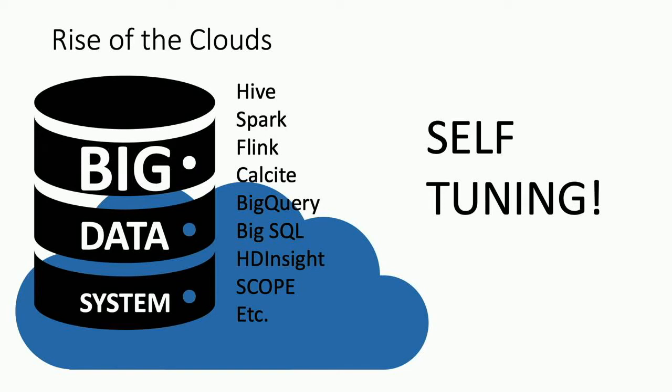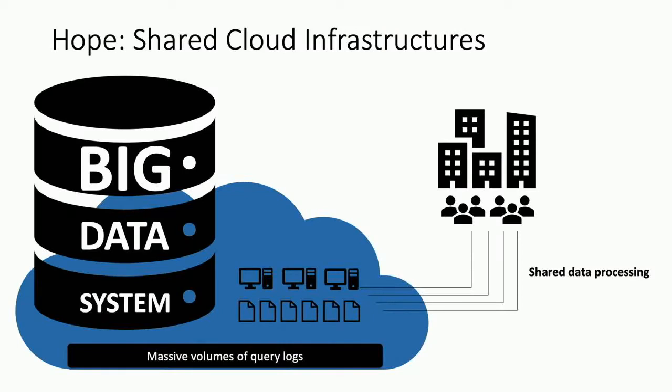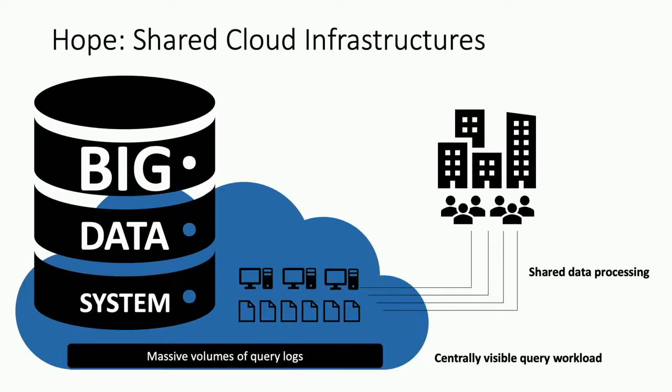Self-tuning is a really hard problem, especially in big data systems. But there is some hope if you look at specific instances — for example, shared Cloud infrastructures. If you look at enterprises where sets of people query or process the same types of data over a shared infrastructure, they end up producing a massive log of queries on the same inputs. That centrally visible query log on the same input sets could be really valuable for tuning.